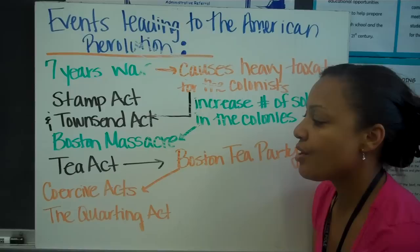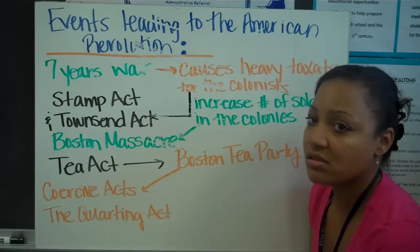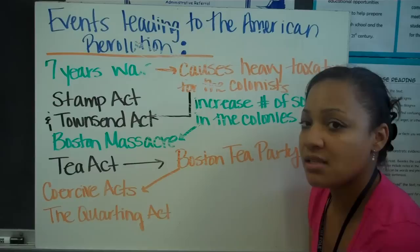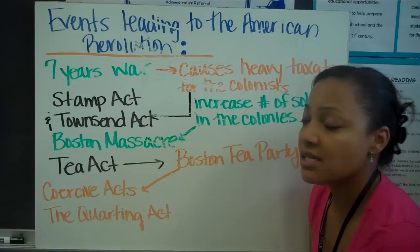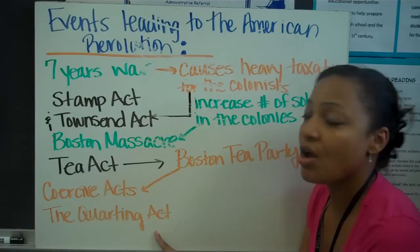This upset the British Crown because they were losing a lot of money from tea being thrown into the ocean. So they passed the Coercive Acts, which the colonists called the Intolerable Acts, because they basically suspended all civil rights — similar to the government taking away our Bill of Rights, restricting freedom of speech and religion because of something the colonists had done.